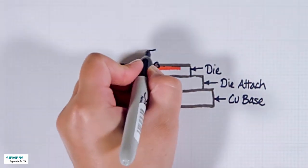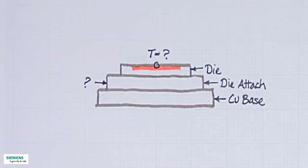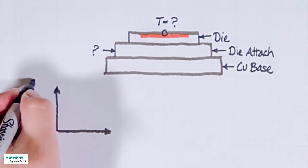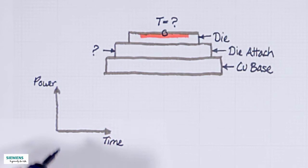The aim is to find out the temperature here and the quality of the die attach here. Here is how. We heat up the component by applying constant power. Then we start the measurement here at zero.